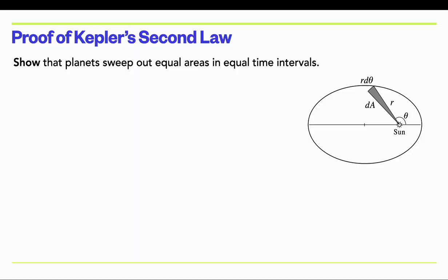Lecture 2.3: Proof of Kepler's Laws. So now we're in a position to prove Kepler's laws from basic Newtonian mechanics. It turns out that Kepler's second law is the easiest to prove, so we'll start with that.